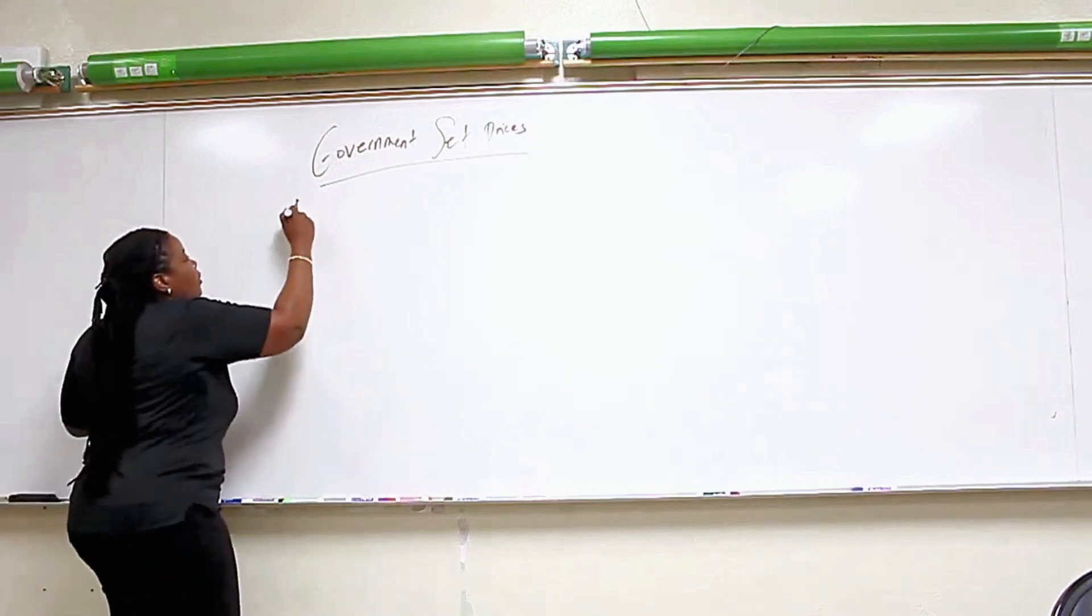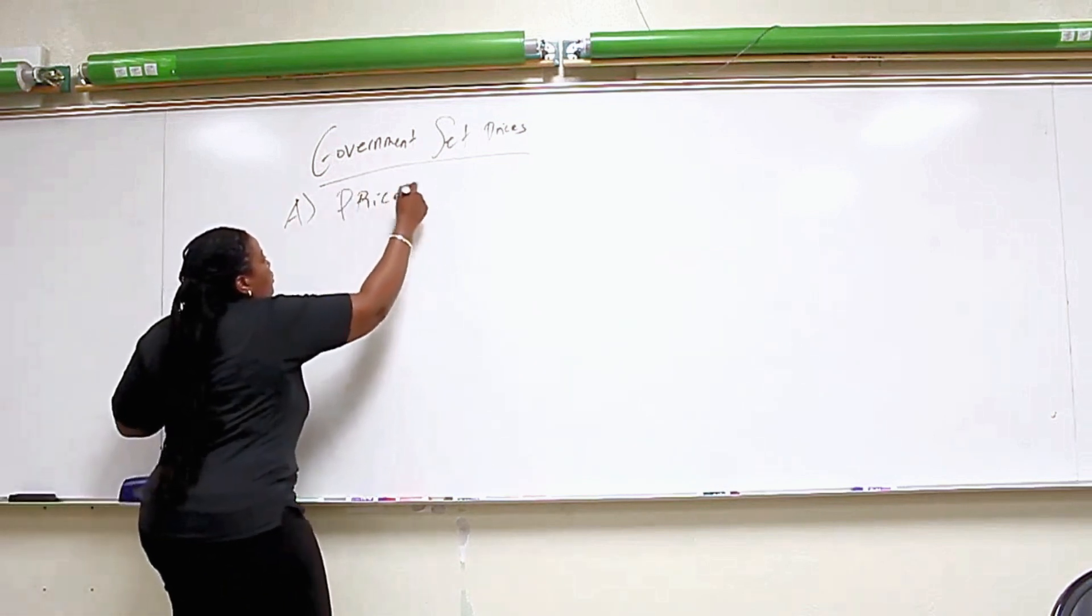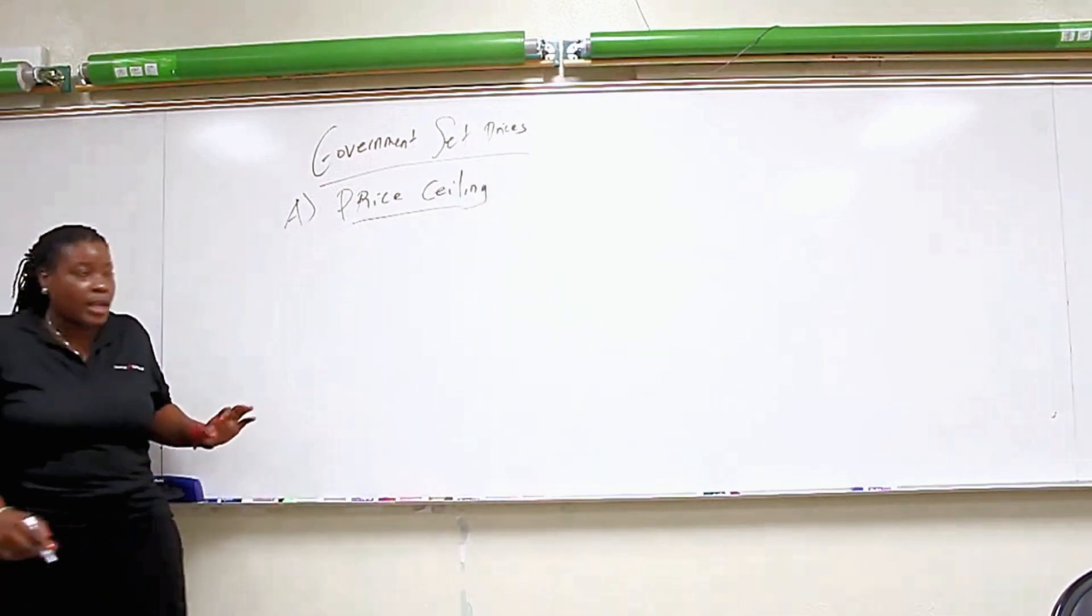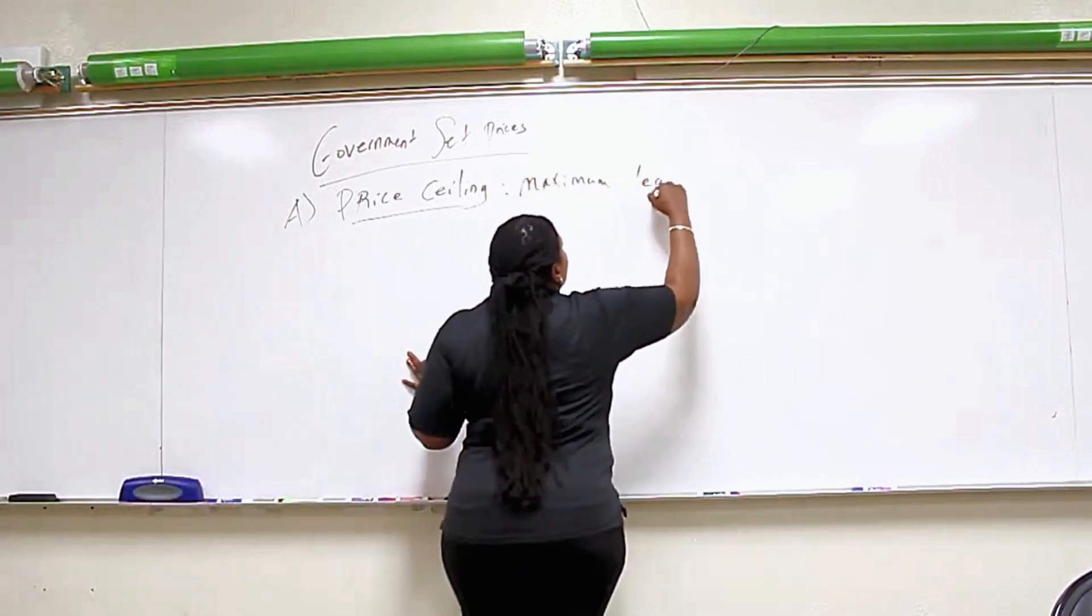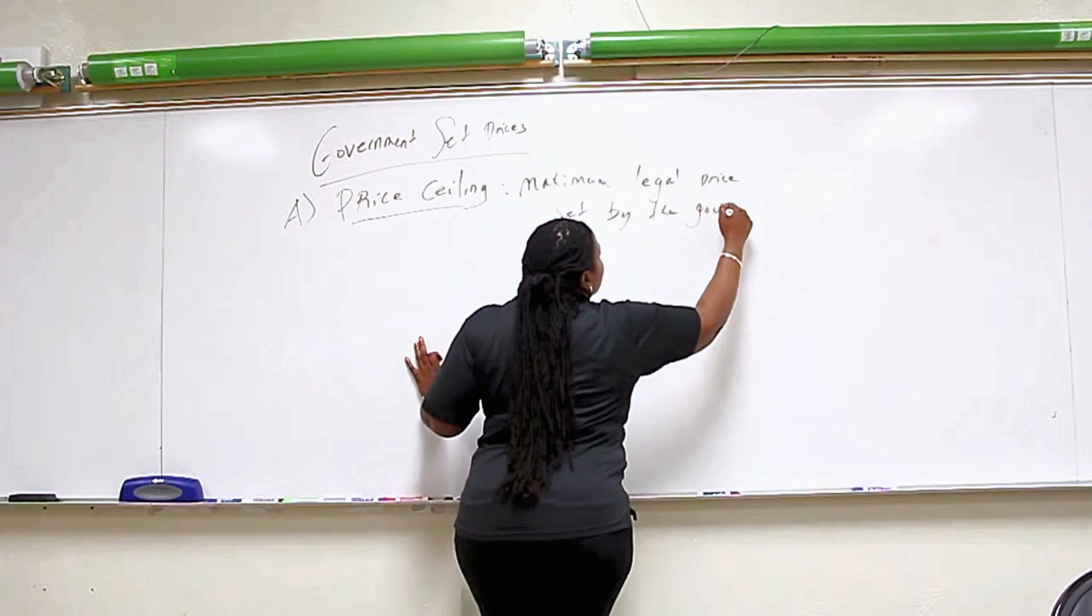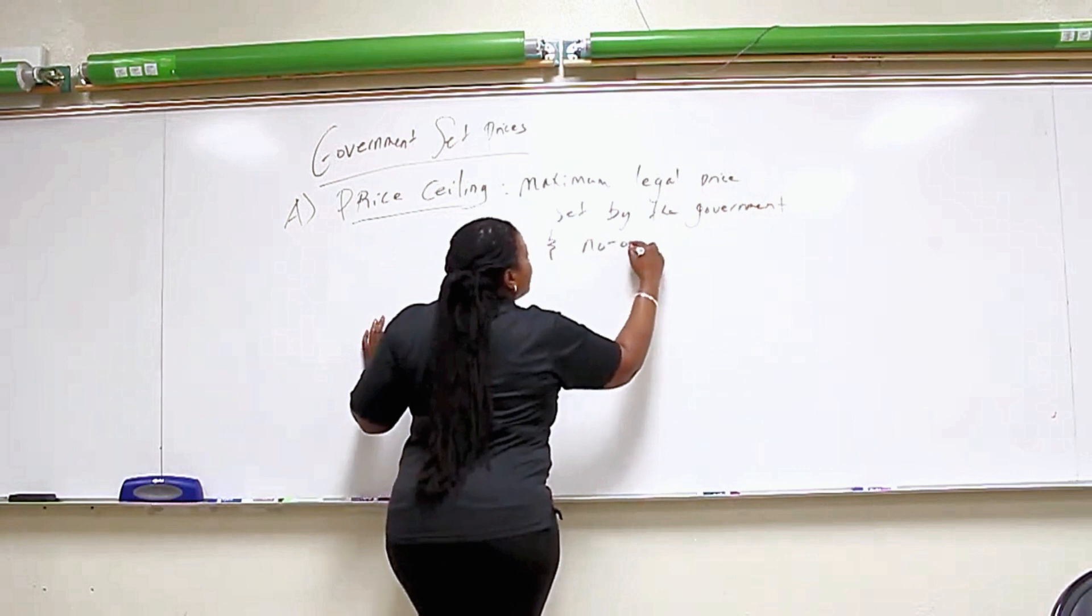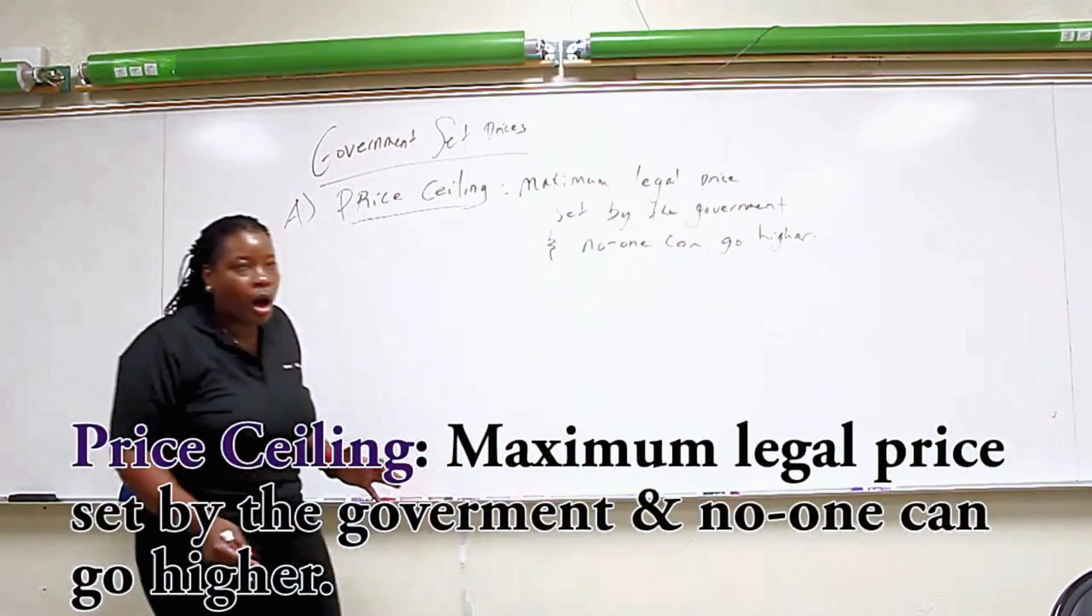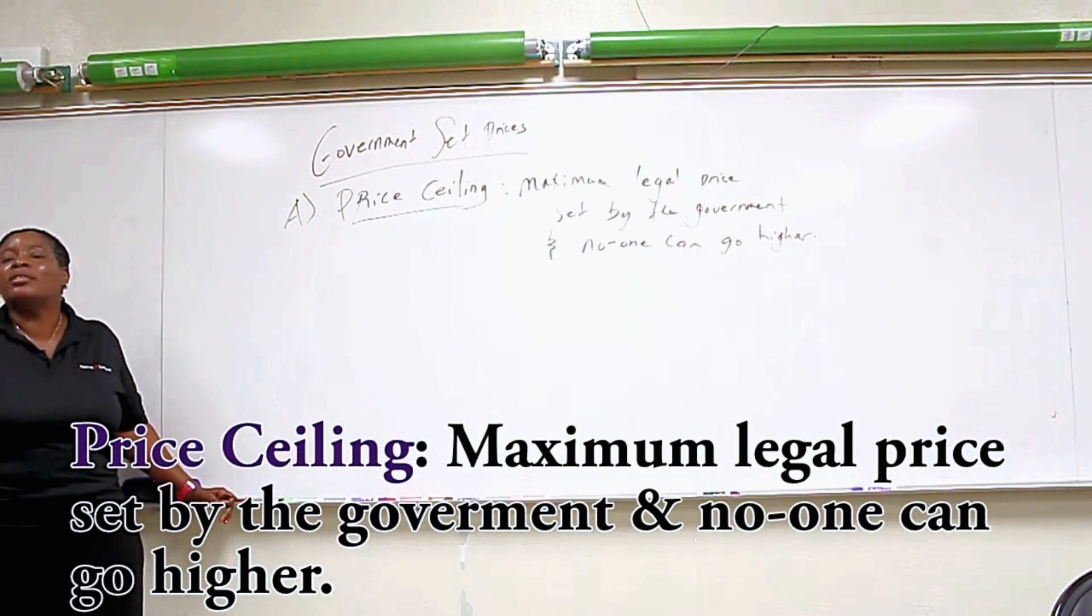The first one is what we call a price ceiling. I'm going to explain this. So the first one is a price ceiling, and a price ceiling is a maximum legal price set by the government and no one can go higher. If you go higher than the ceiling you are breaking the law. That's the idea. A price ceiling, some maximum legal price set by the government.